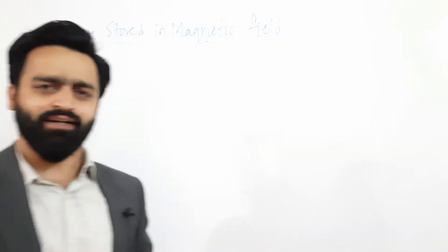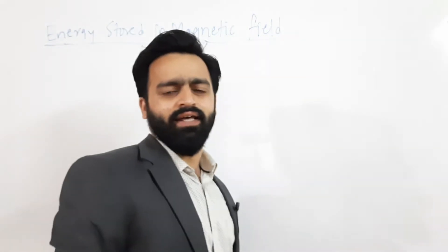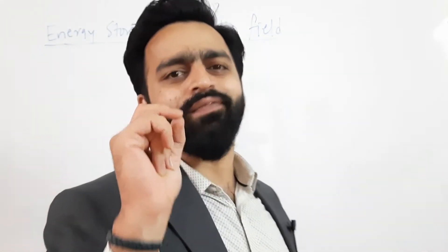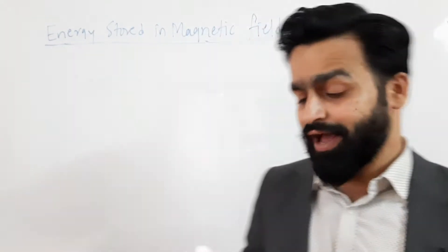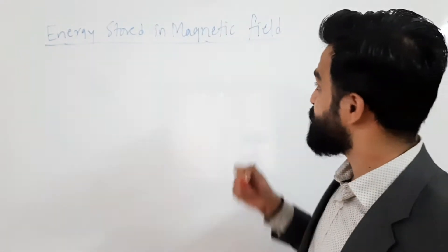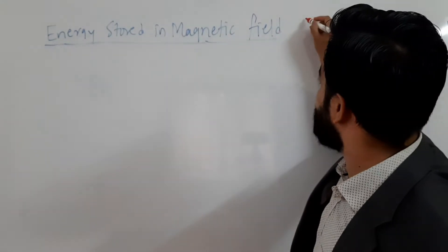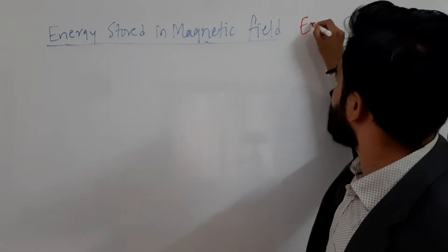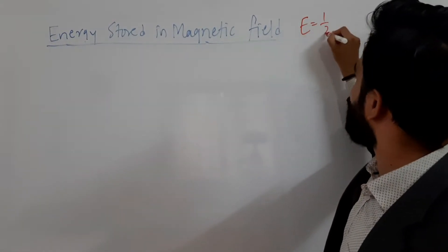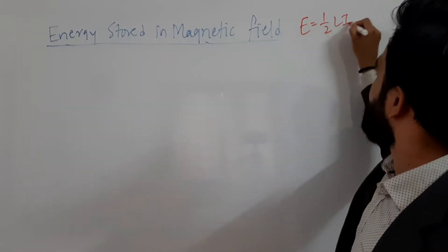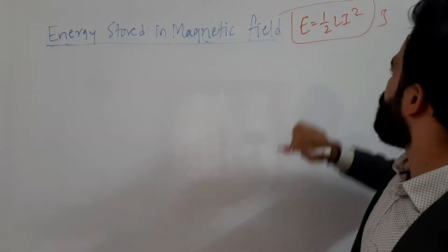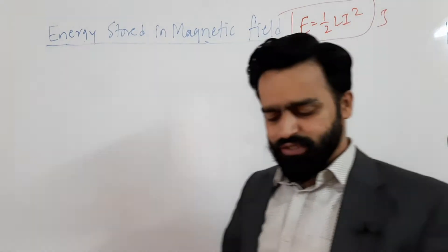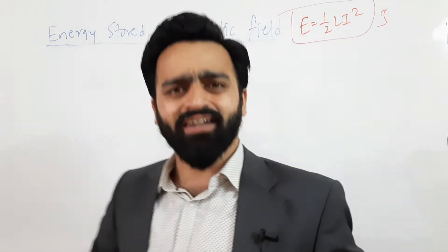In every inductor there is a storage of energy in the form of a magnetic field, and today we are going to derive its equation. I hope you already know the equation — it is E = (1/2)LI². We need to derive this equation; of course its unit is joule. Let's start the derivation.